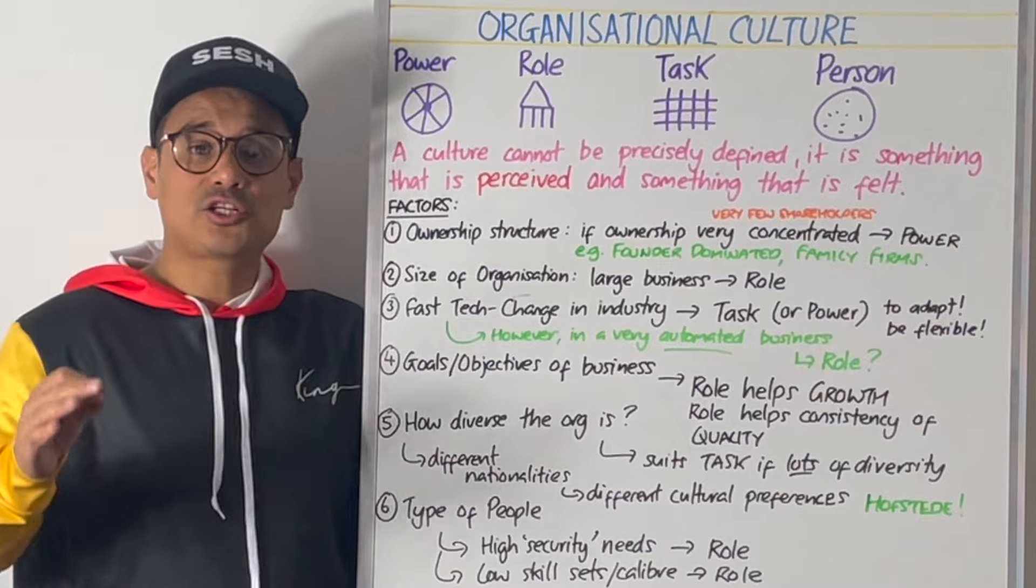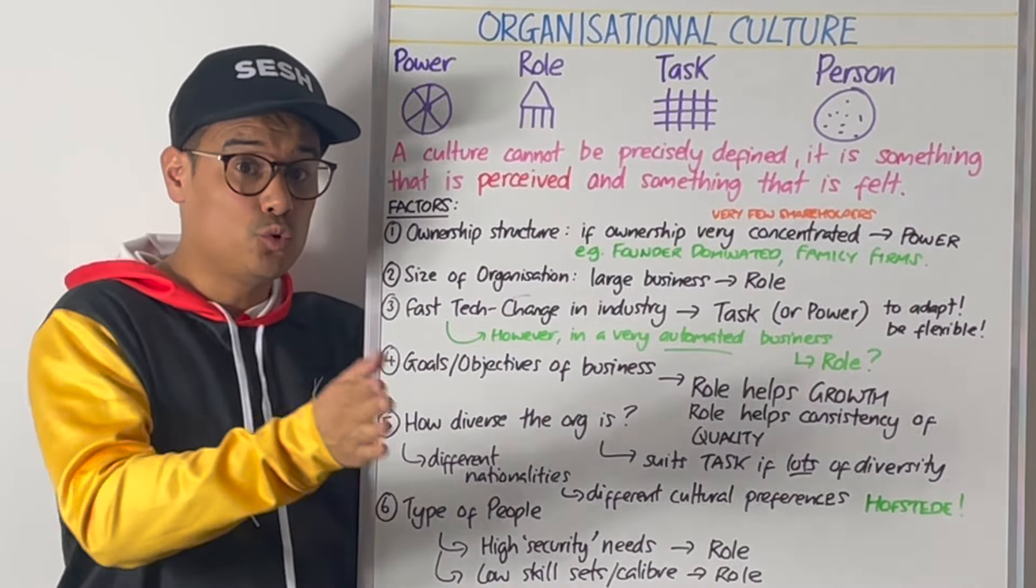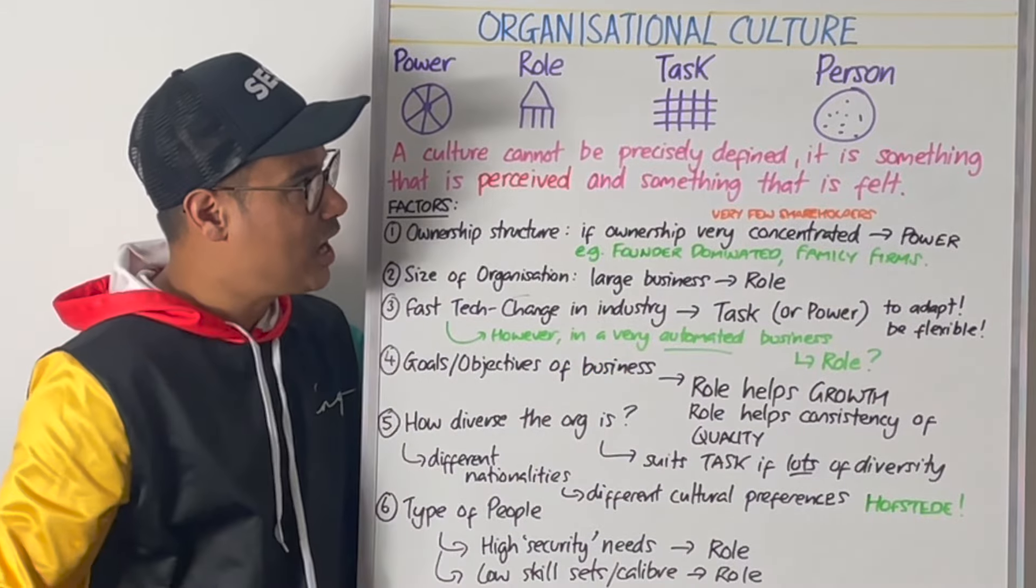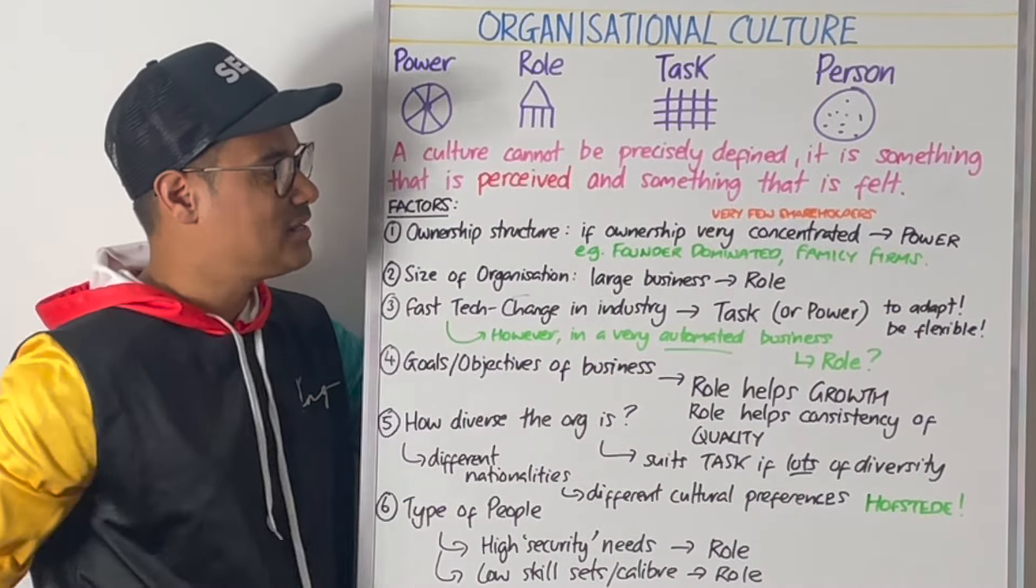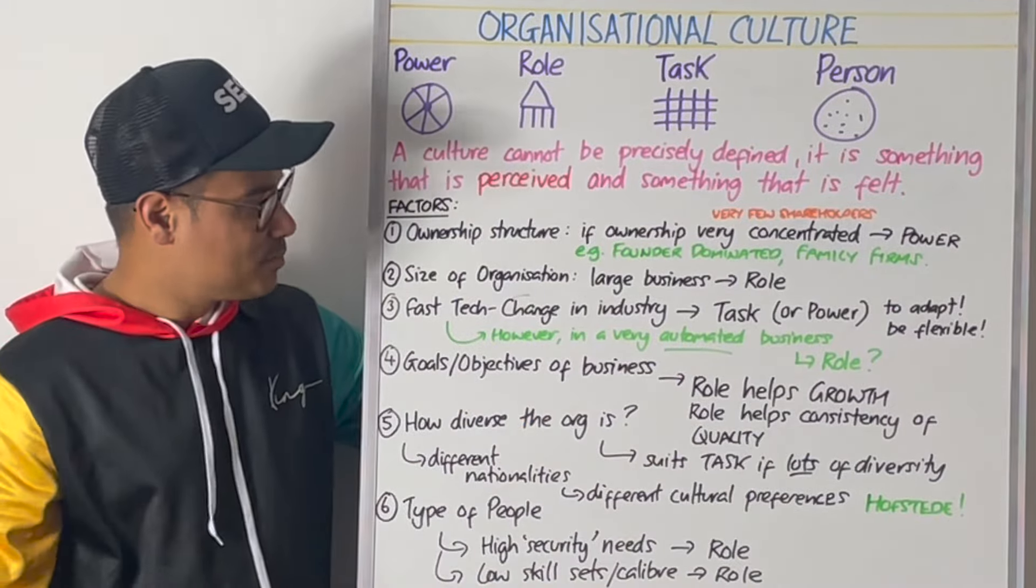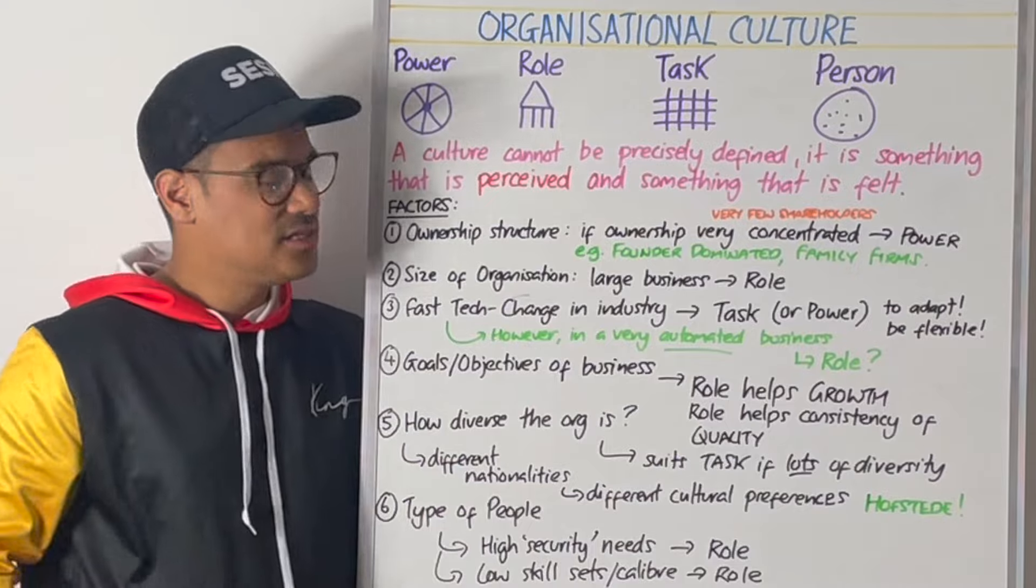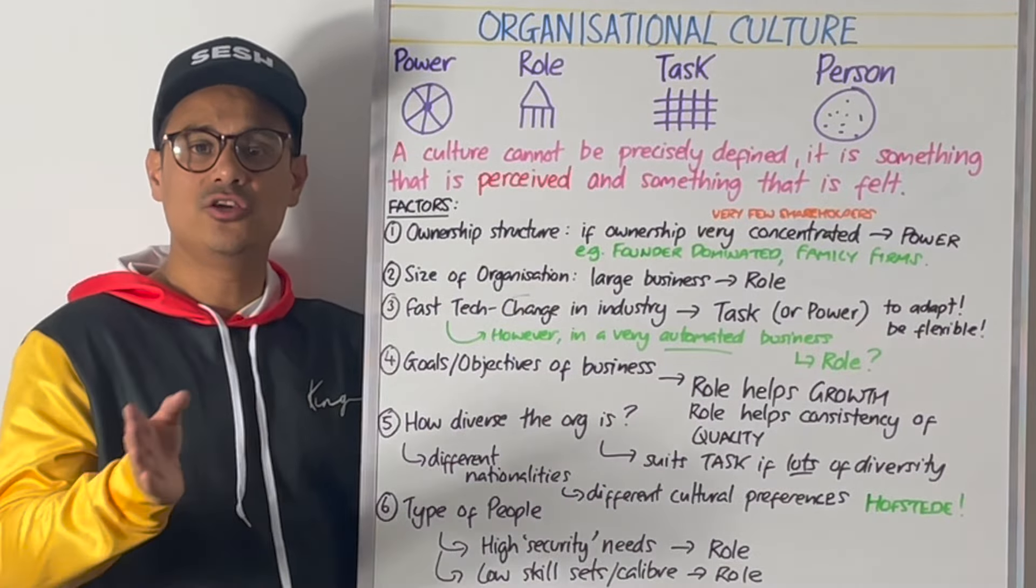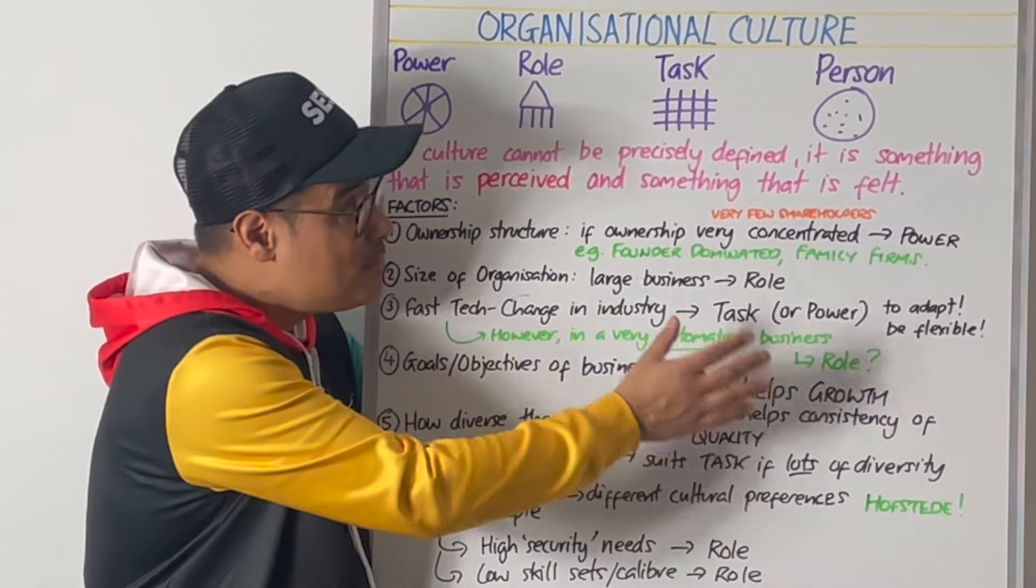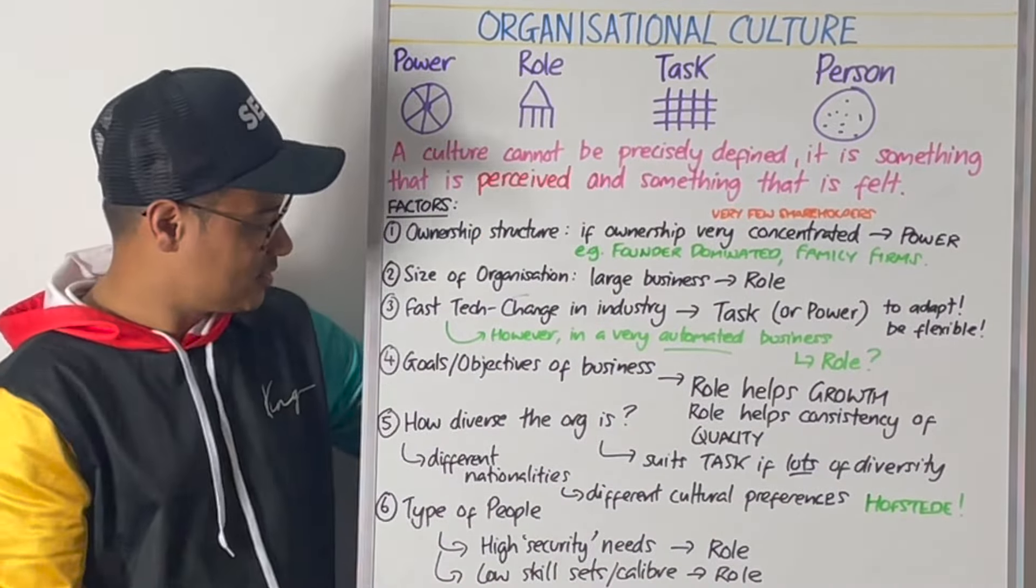The third thing is tech change. How fast is the technological change in the industry? If it is very fast, you'll probably want task in place because of the flexibility, or power because of the adaptability. However, if the business is manufacturing and heavily relies on automation, is very capital intensive, maybe that might be a situation where role culture will make sense.